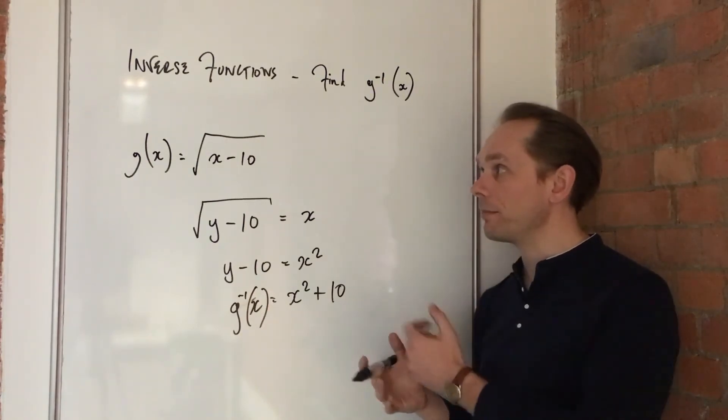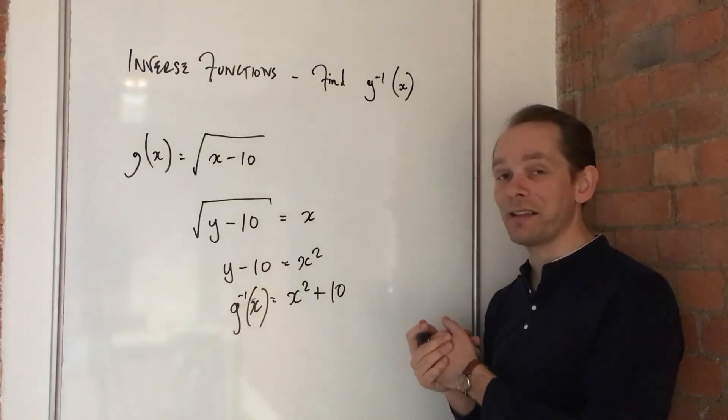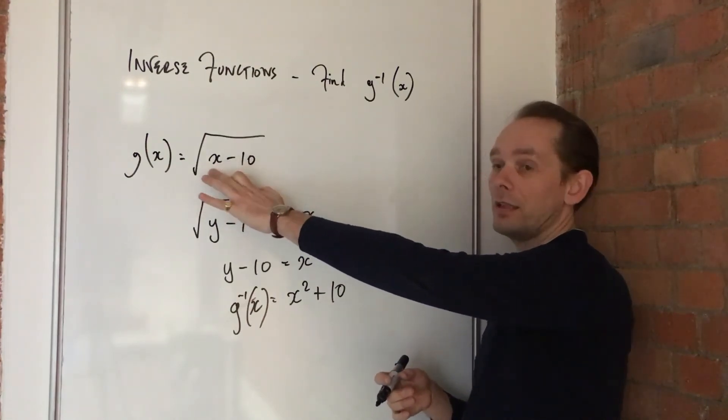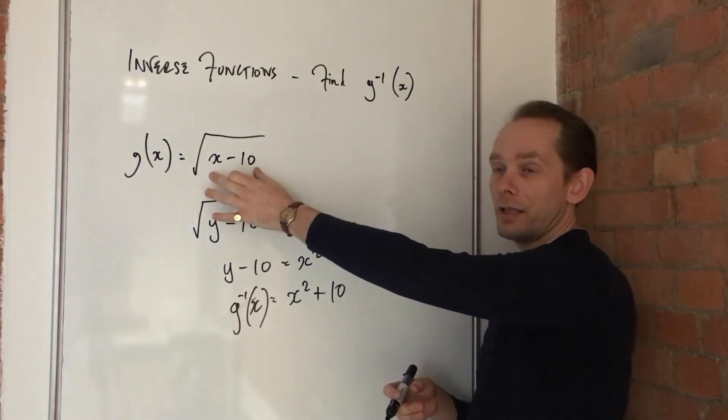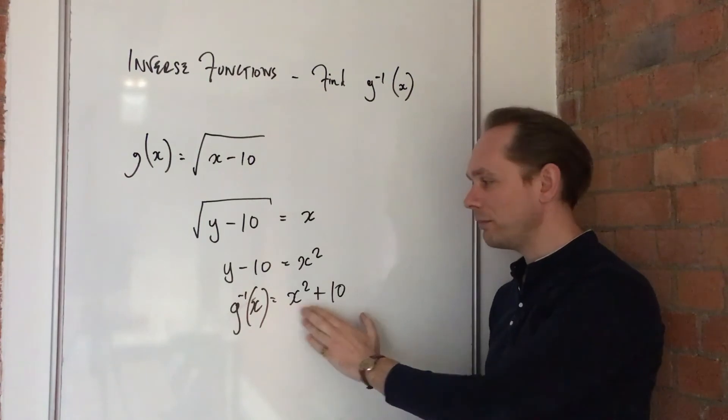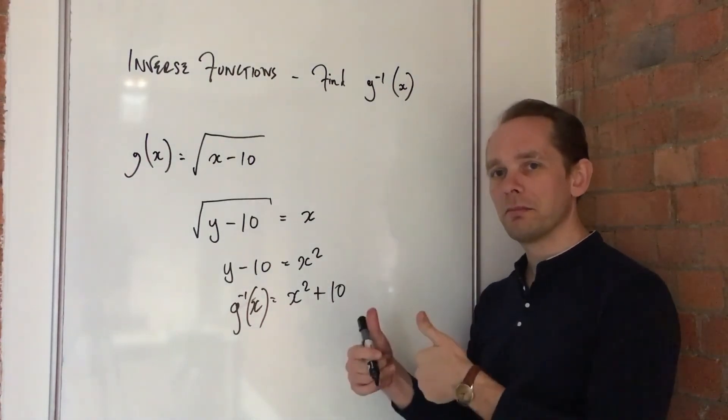Let's just test this. I'm going to imagine a number. I'm going to say x is 19. Do the function on x. So 19 take away 10 is 9. Square root is 3. Now let's put 3 into this and see if we get back to 19. 3 squared is 9 plus 10 is 19. It works.